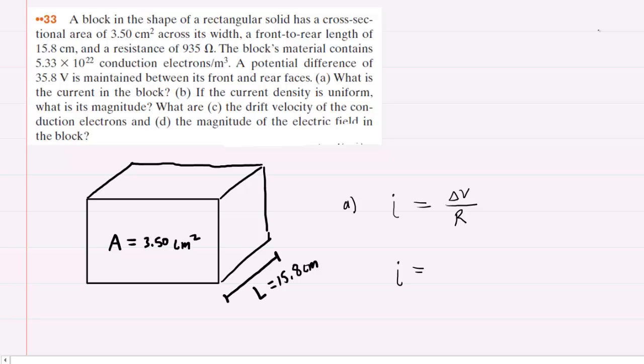The question notes that the potential difference is 35.8 volts, and the resistance is given as 935 ohms. So we simply divide these two quantities and we get a current of 0.0383 amps. This is the correct answer to part A.